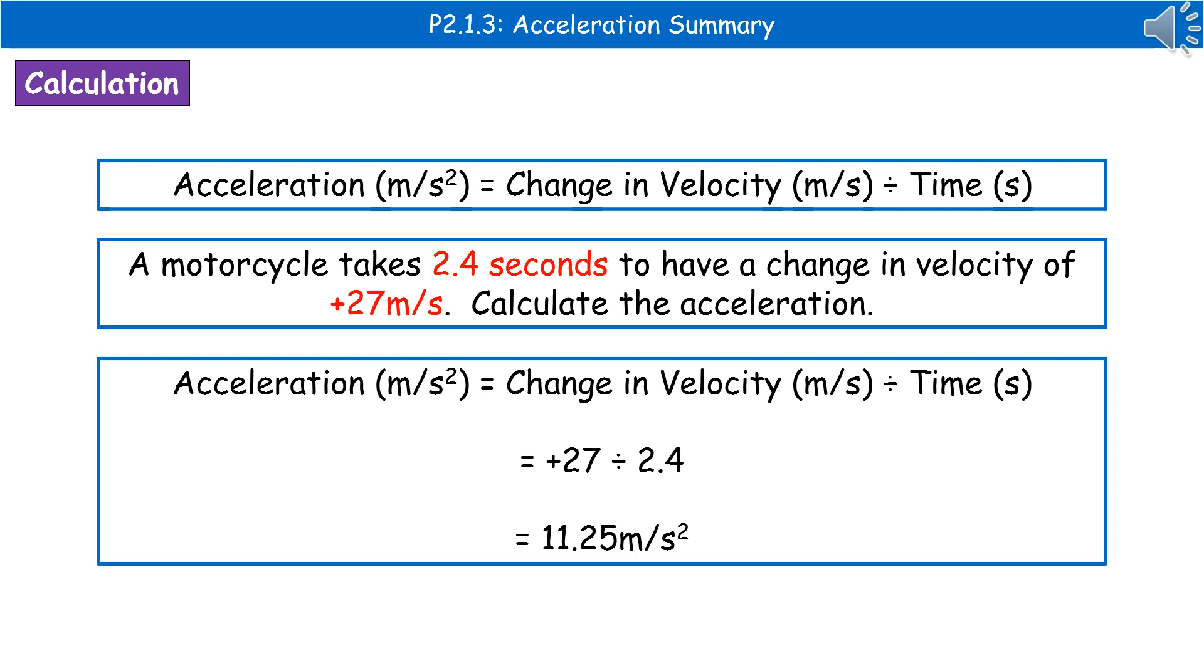Then we substitute in our values, plus 27 divided by 2.4, plug that into your calculator, and then write down the response. So that should give you a result of 11.25 meters per second squared.